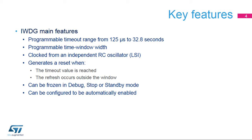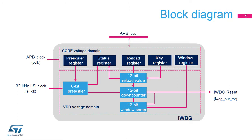This window feature is optional and not present in all Independent Watchdogs. It is possible to enable the Independent Watchdog automatically after a system reset. It is possible to define the behavior of the Independent Watchdog in debug, stop, or standby mode. The Independent Watchdog registers are located in the core voltage domain, while its functions are in the VDD voltage domain.